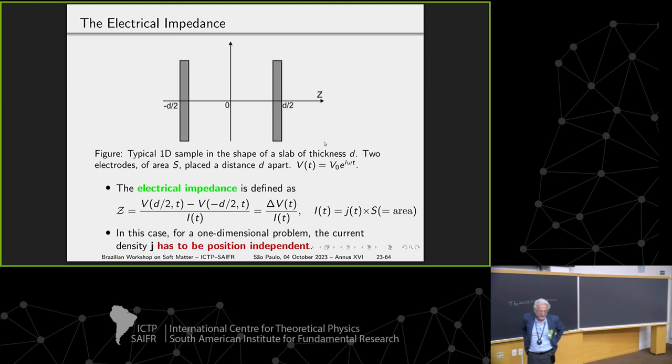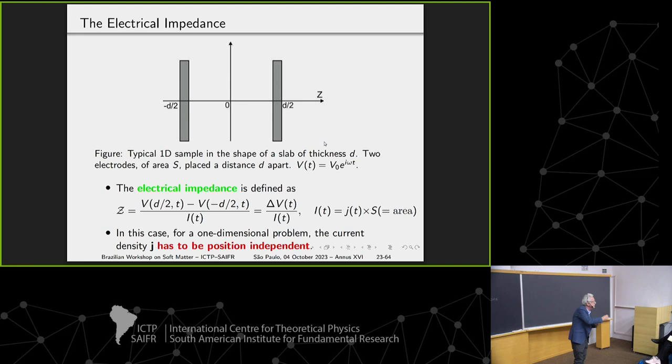This is measured in a laboratory as a function, for instance, of the frequency of the applied field. You get some curves of Z as a function of omega. You ask for real parts, imaginary parts, and so on, and you have your analysis.